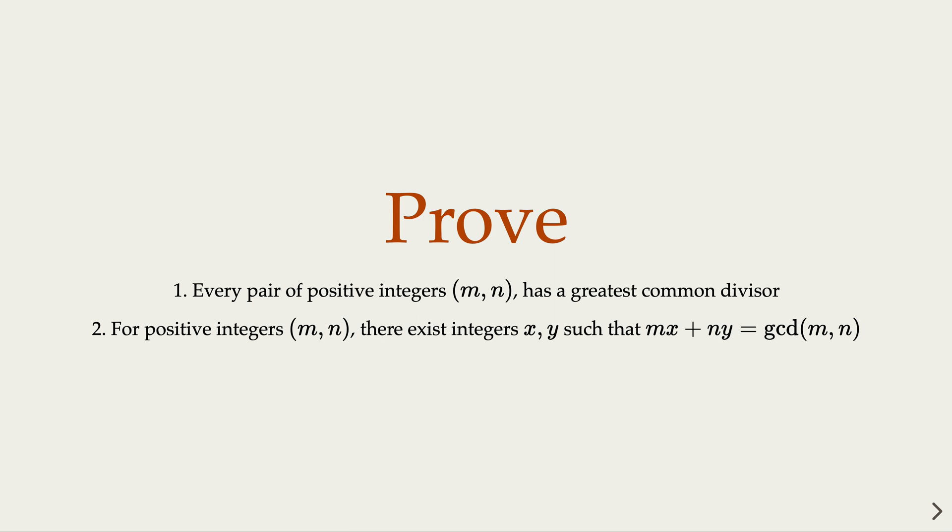And the second one, for a pair m and n positive integers, there exist integers x, y, here x, y could be positive or negative, such that mx plus ny equals the greatest common divisor of m and n.